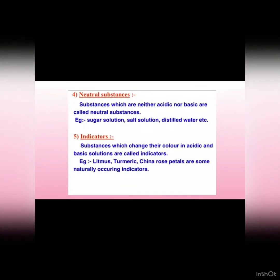Now, what are indicators? Indicators are those substances which change their color in acidic and basic solutions — meaning they give different colors with acids and bases. There are two types of indicators: natural indicators and synthetic indicators.